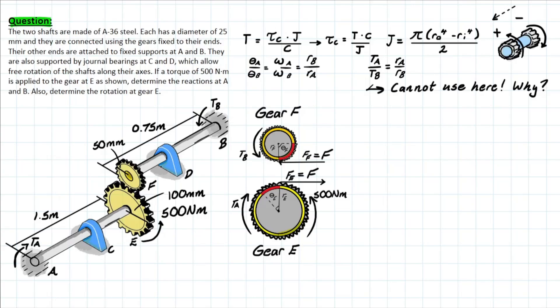We'll notice that 500 N·m is being applied at gear E, which is drawn right here, and we know that because this system is fixed, we're going to have two reactions that are produced at B and at A in order to resist this 500 N·m torque applied.